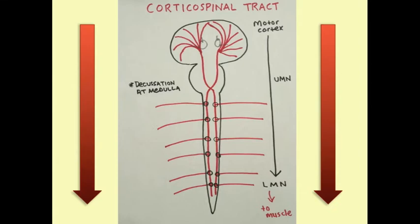Once decussation occurs, the nerves continue — they're still the same nerve, still upper motor neurons — all the way to wherever they synapse. Where they synapse determines where they're going. Nerves that innervate the arm synapse higher than nerves that innervate the leg. At that synapse point, it becomes the lower motor neuron — a different nerve — and that ultimately goes to muscle.